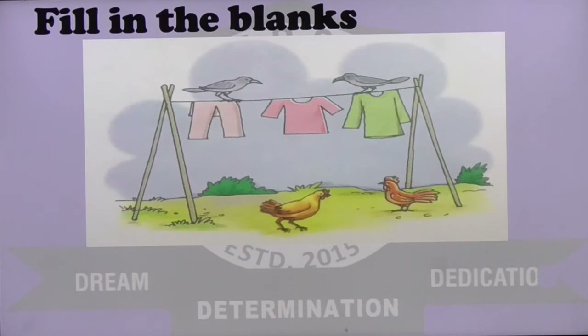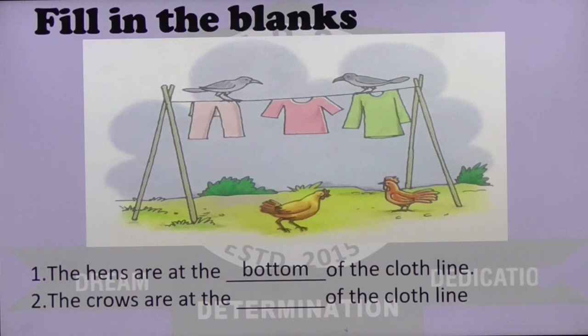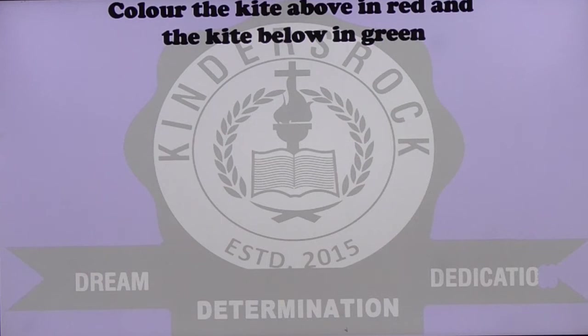There we have the picture of a clothesline. On the top of the clothesline, who is sitting? There are some crows, and below there are some ants. So the ants are at the bottom of the clothesline and the crows are at the top of the clothesline.